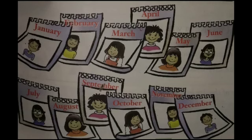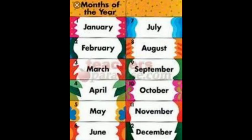There are 12 months in a year: January, February, March, April, May, June, July, August, September, October, November, December. There are 12 months.